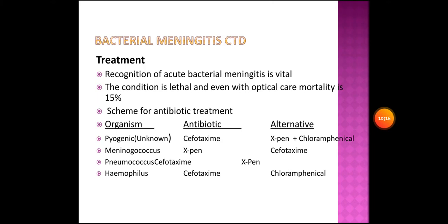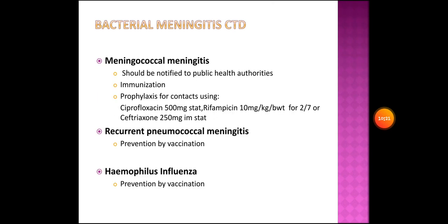Management of meningococcal meningitis: it should be notified to public health authorities. Immunization should be done. Prophylaxis for contacts using ciprofloxacin 500 mg stat, rifampicin 10 mg/kg body weight for two days, or cefotaxime 250 mg IM stat. Recurrent pneumococcal meningitis and Haemophilus influenzae meningitis are both prevented by vaccination.